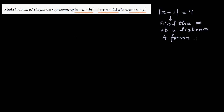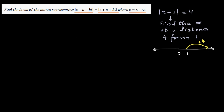So if you draw a number line — suppose this is a number line, this is 0 and this is 1 — which numbers are at a distance of 4 from 1? Well, one number to the right at a distance of 4 gives you +4, so the answer is 5. And if you go 4 to the left from 1, you reach minus 3.